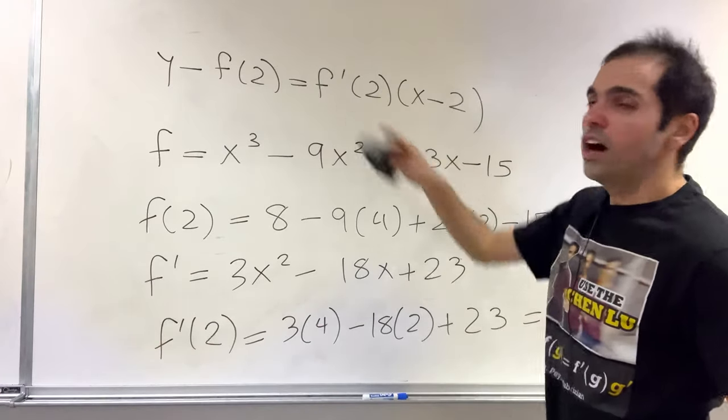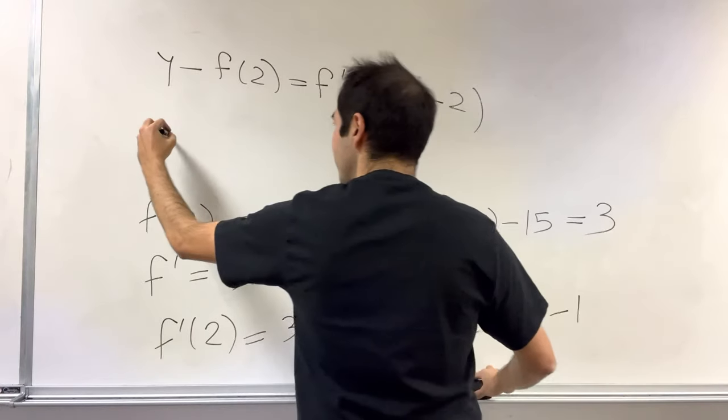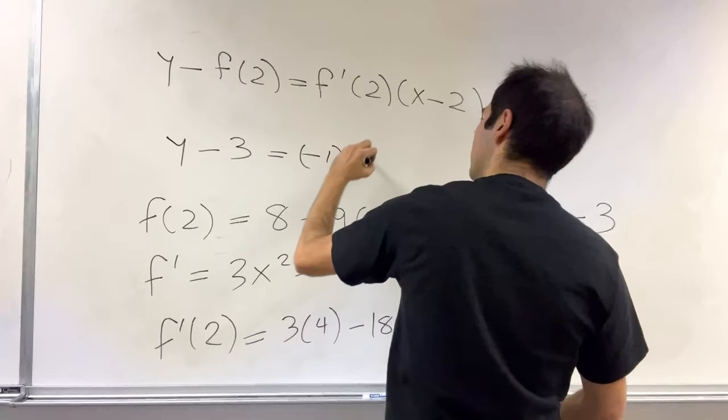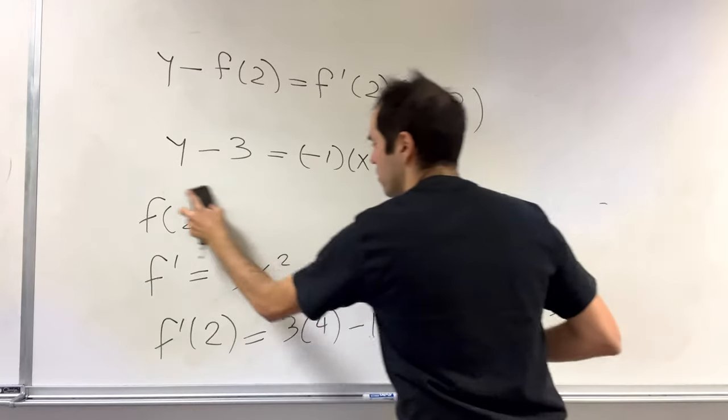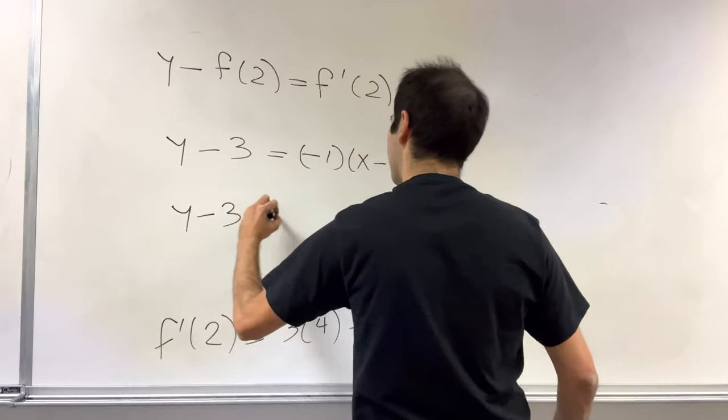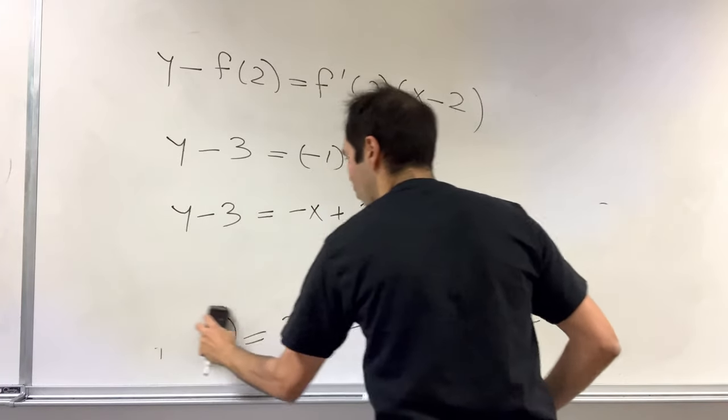So now what is the equation of the tangent line? Well, in this case, y minus 3 equals minus 1 times x minus 2, right? And then what we get is y minus 3 equals minus x plus 2, and so y is 5 minus x.